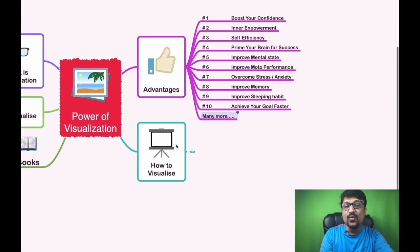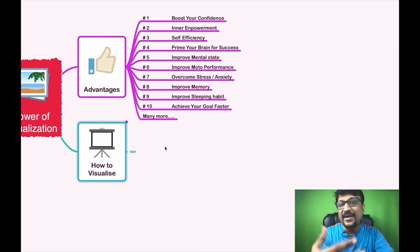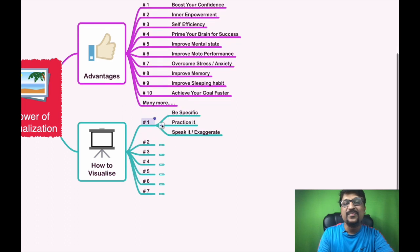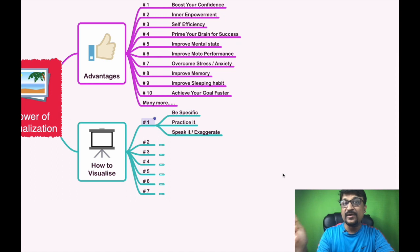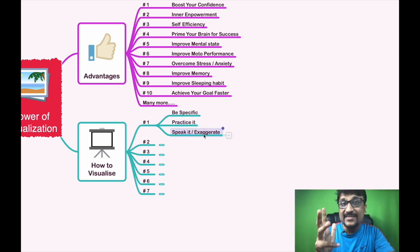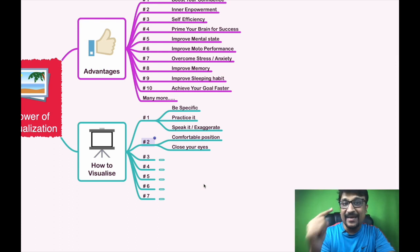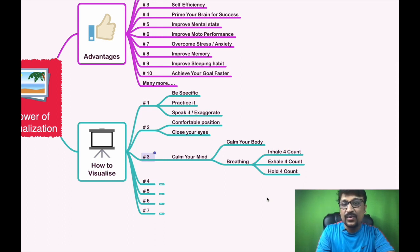Now let me move on to how to visualize — what are the best practices we can use to improve your visualization. Step one: decide on a specific future goal. What do you want to achieve in one year, two years, or five years? You should be specific and practice regularly while also exaggerating during visualization. Step two: find a good, comfortable place, close your eyes, and start visualizing. It is something like meditation — you get into a deeper level of visualization.